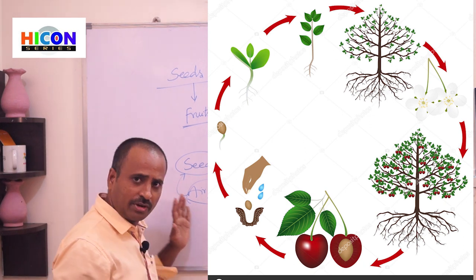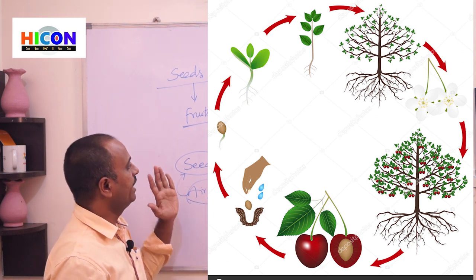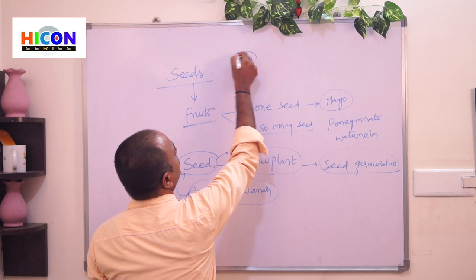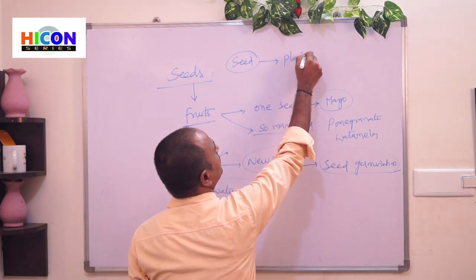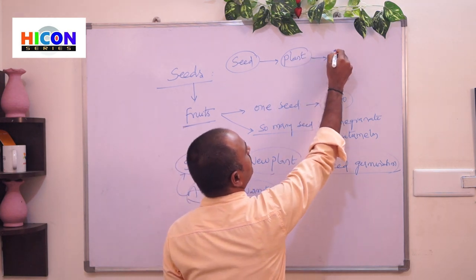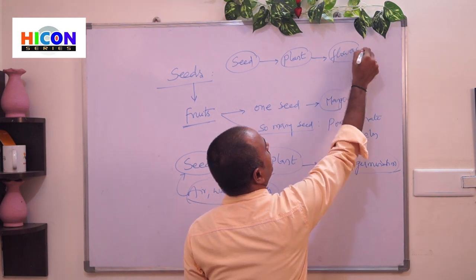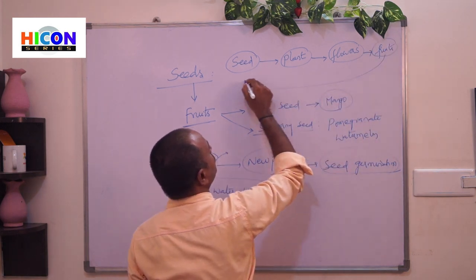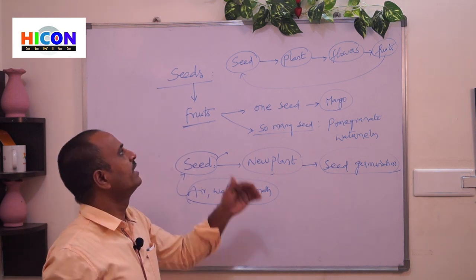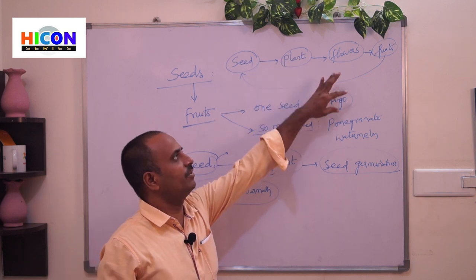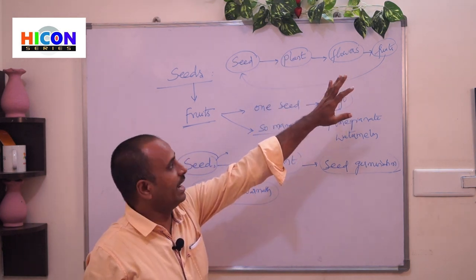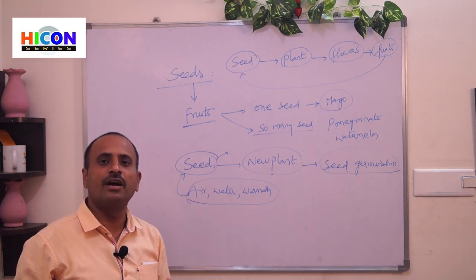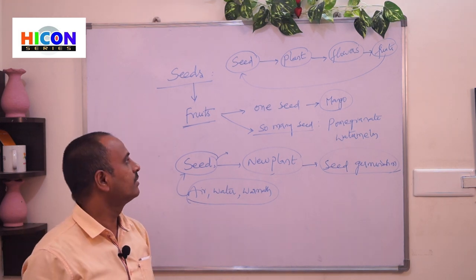This is the flow of how a new plant grows. A seed grows into a plant, the plant gives flowers, the flowers turn into fruits, and again fruits give seeds. In this way plants reproduce their new plants and are able to survive on the earth so the species does not become extinct.